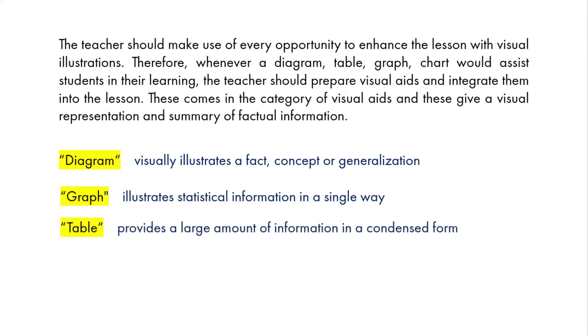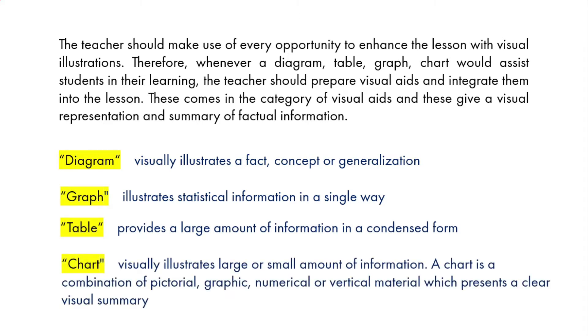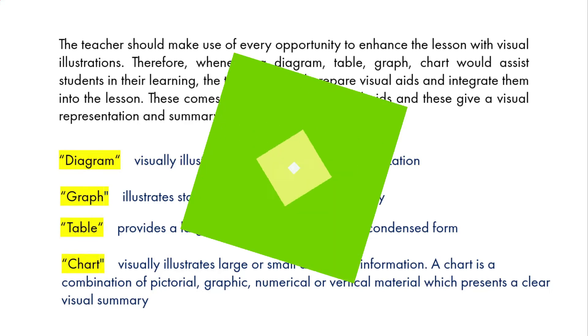Table provides a large amount of information in a condensed form. Chart visually illustrates large or small amount of information. A chart is a combination of pictorial, graphic, numerical or vertical material which presents a clear visual summary.